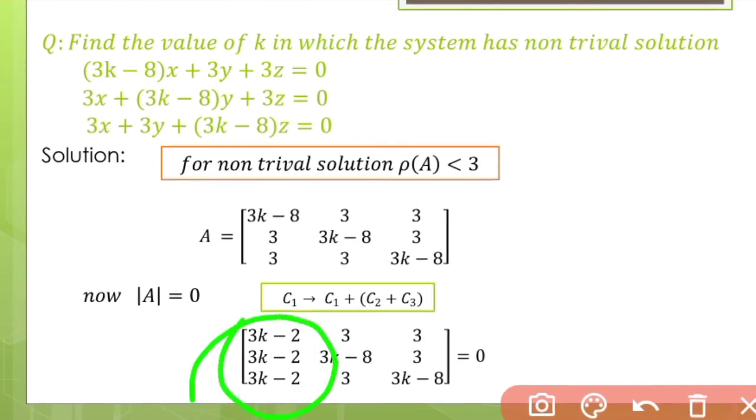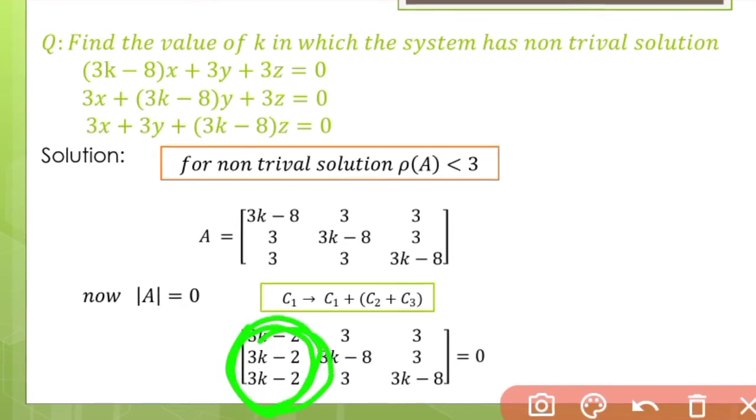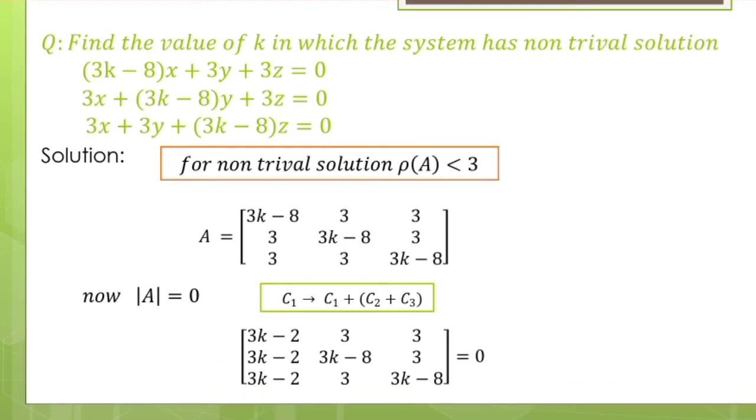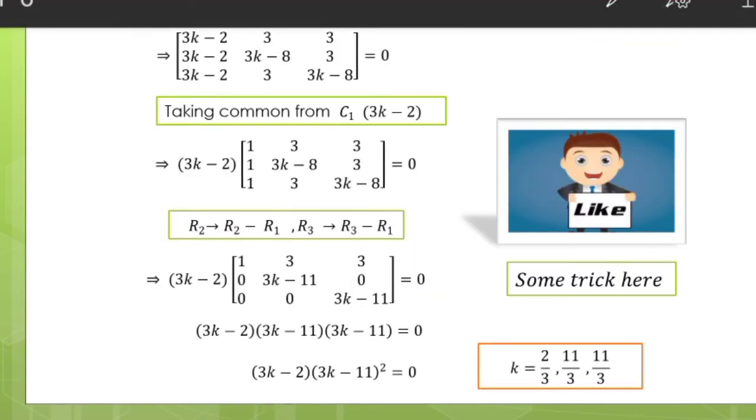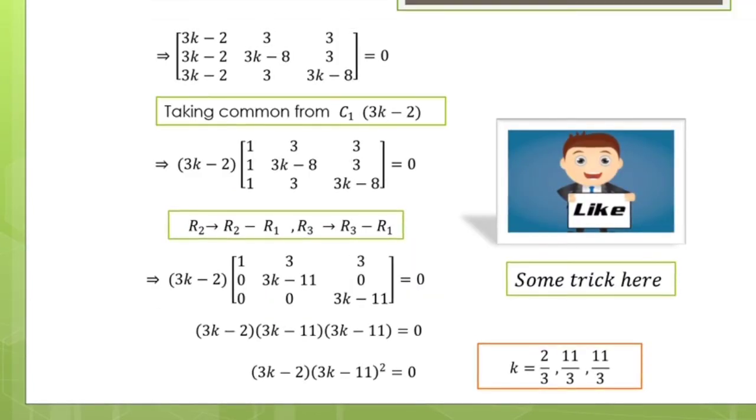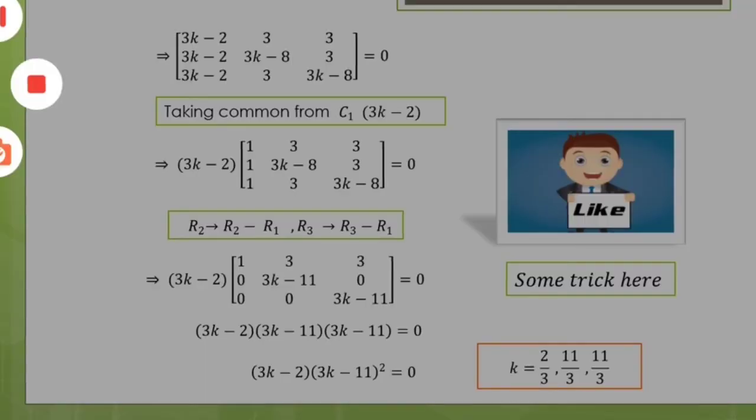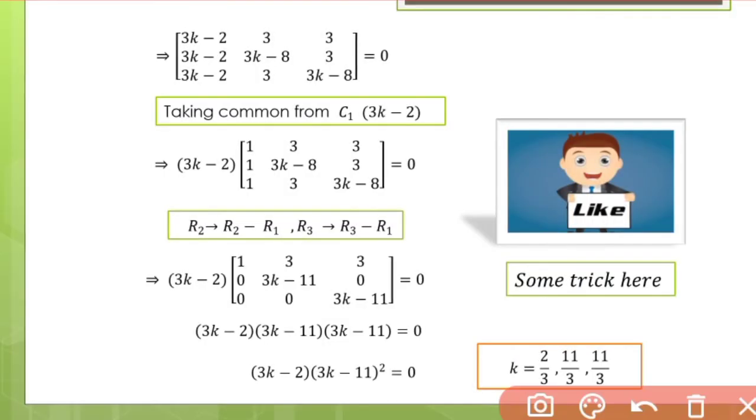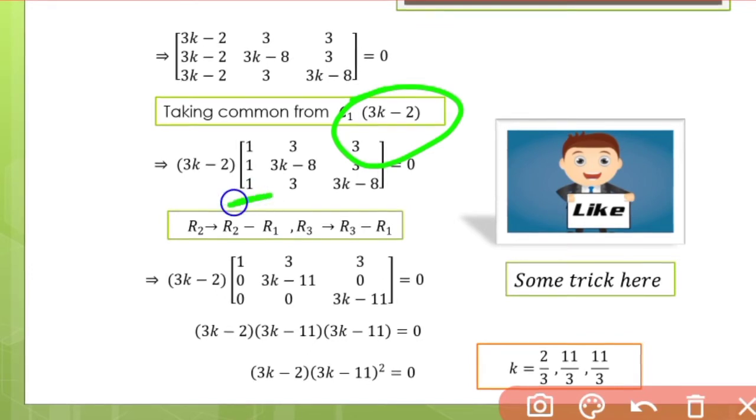After taking 3k minus 2 common from C1, we get 1, 1, 1 in that column. Now see, what happens in the equivalent form? The diagonal element of the bottom part should be zero. We can create the equivalent form to reduce the calculation.